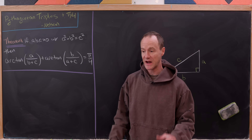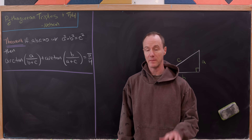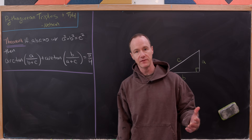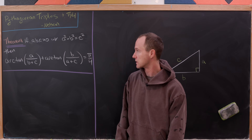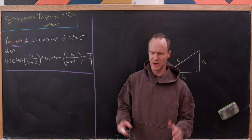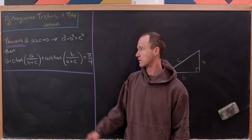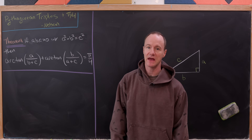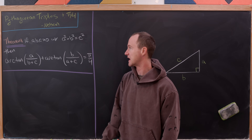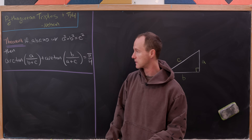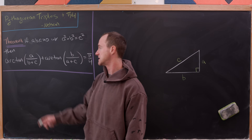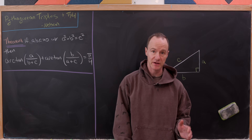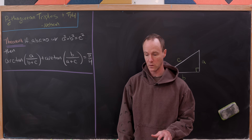Here we're going to outline a nice strategy for making infinitely many formulas for pi involving the inverse tangent of rational numbers. We'll start by proving something a little bit more general: if we've got positive real numbers a, b, and c that satisfy a squared plus b squared equals c squared, then arctan(a/(b+c)) plus arctan(b/(a+c)) equals pi over 4.